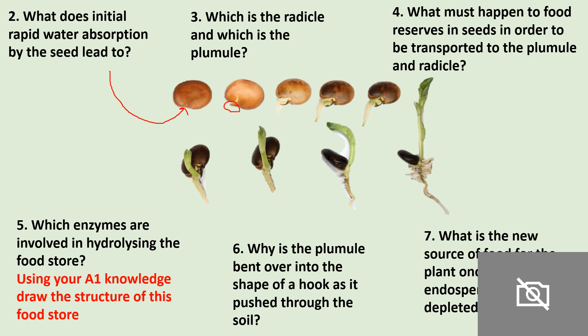Which is the radicle and which is the plumule? Think R for root, R for radicle. The radicle in this diagram is the root, and the plumule is the part that will become the stem.